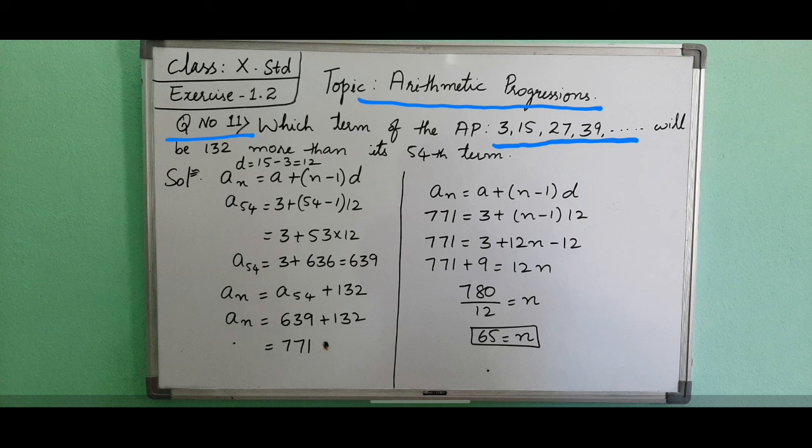Now we will see here what is a, d, and how to find a54. After getting the 54th term, we can find for the next value for n.